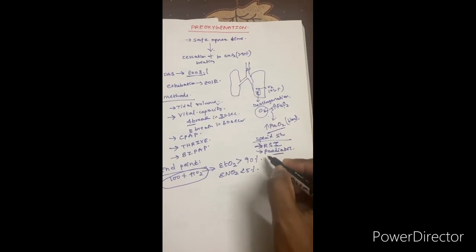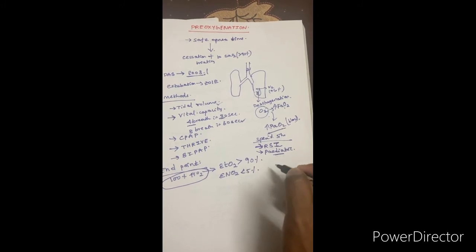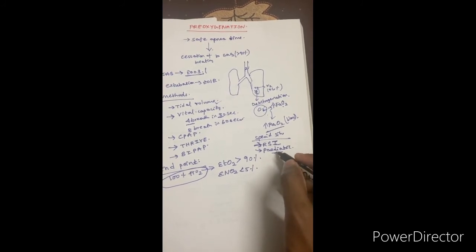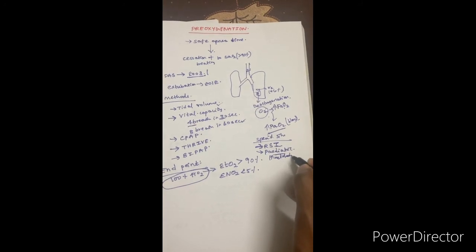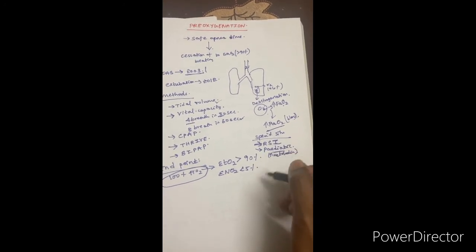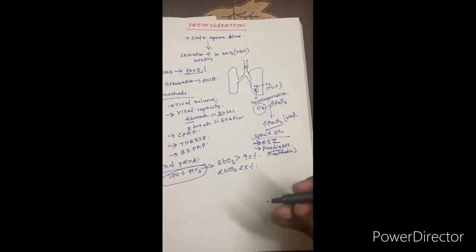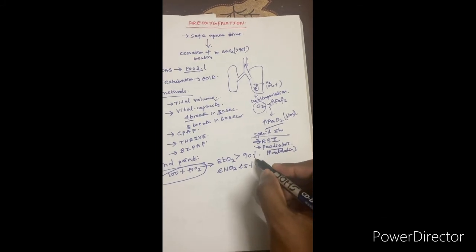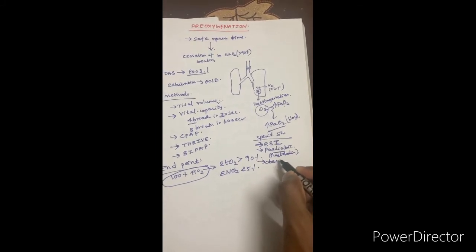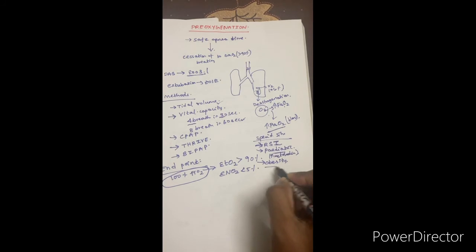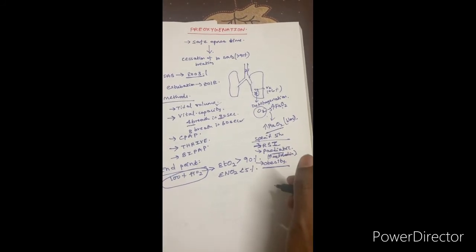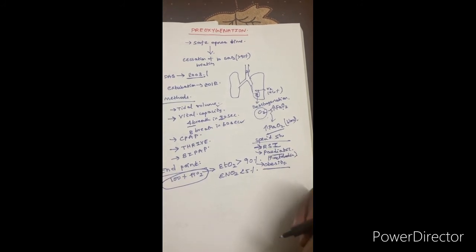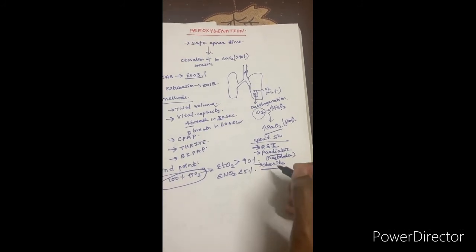Pediatric patients are a special population: they have low functional residual capacity (FRC), low tidal volumes, increased metabolism, and increased oxygen consumption. They tend to desaturate very quickly compared to adult patients.